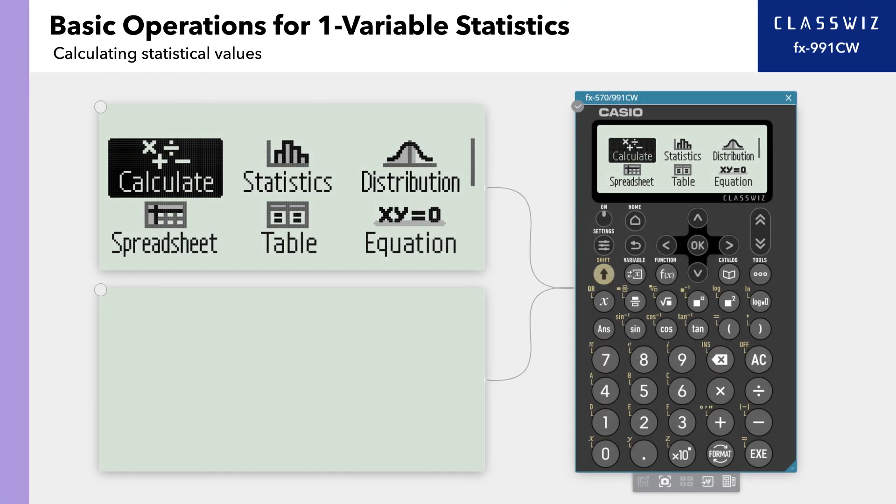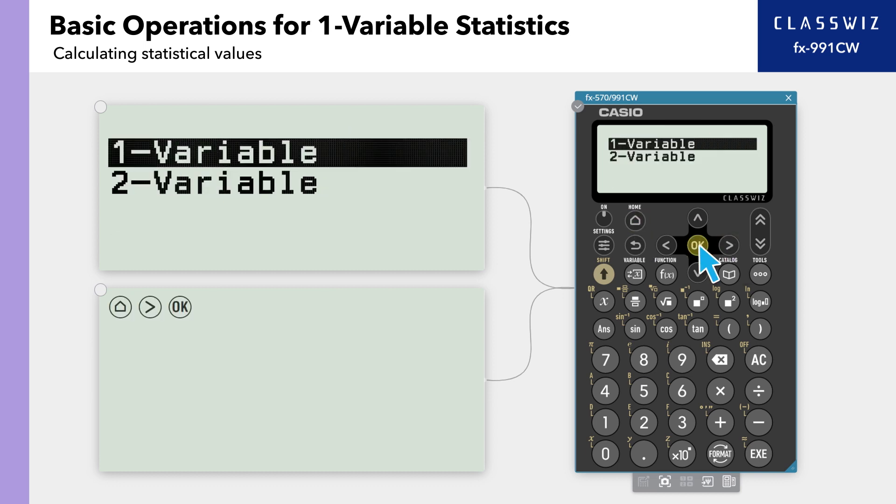First, let's go over calculating various statistical values such as mean, variance, and standard deviation. Press home, then select statistics, then one variable.